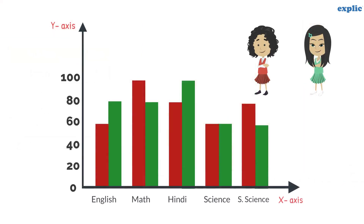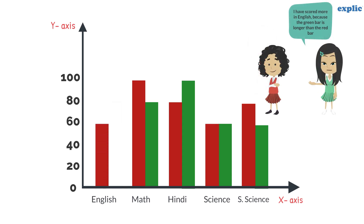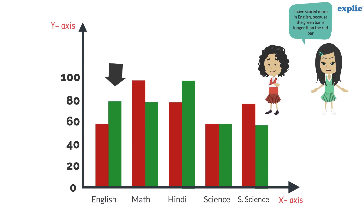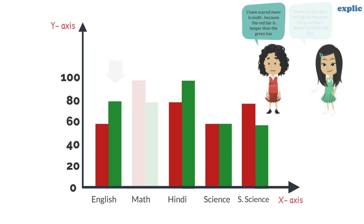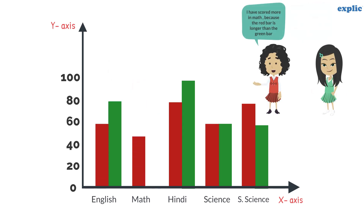Let's compare both the graphs. Can you tell me who has scored more in English and math? I have scored more in English, because the green bar is longer than the red bar. I have scored more in math, because the red bar is longer than the green bar.